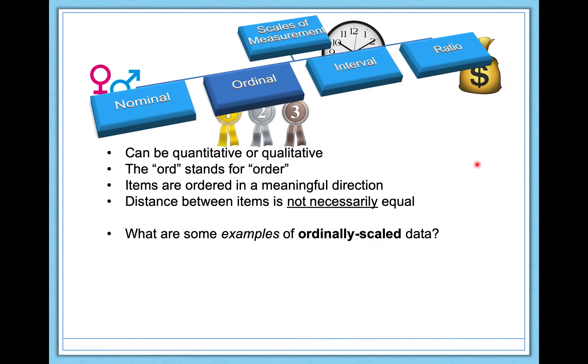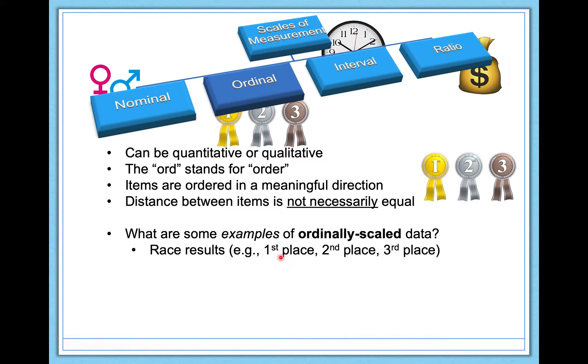We'll see some examples of ordinally scaled data. One is race results. You might have somebody in a 5K get first place, somebody else gets second place, somebody else gets third place. I can either make this quantitative—maybe in my spreadsheet I'll write down one, two, and three—or I can make it qualitative and I can actually write down first place, second place, and third place.